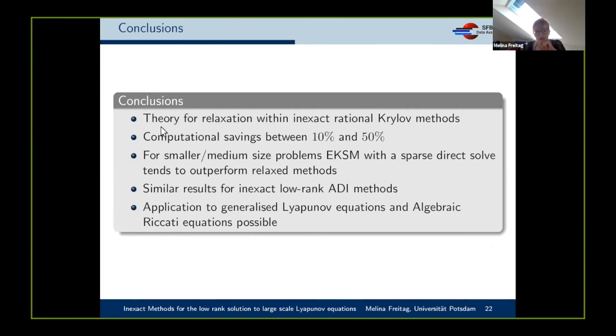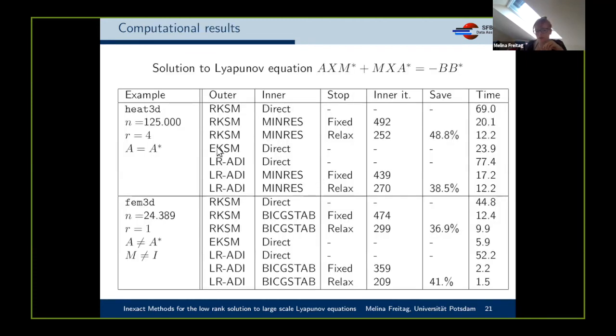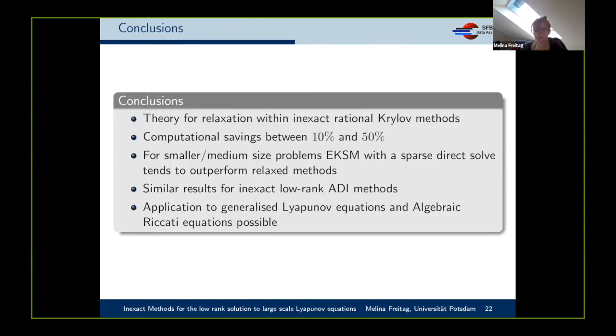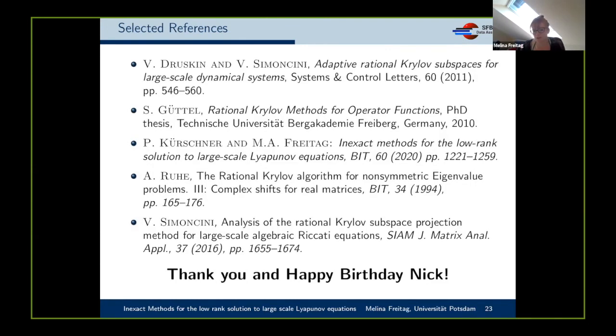Let me conclude. I've shown you some theory for inexact rational Krylov subspace methods. We've seen there are quite a bit of savings when you do this. We can extend this to ADI methods. What I haven't pointed out but you saw in the table is we can also beat the extended Krylov subspace methods—that's a method where you don't use shifts. You can use direct solves, but this is only true for very large problems. For smaller problems, the extended Krylov subspace methods do a better job. What I also haven't told you is that this can be applied to the Riccati equation. Here are some references. Thank you for listening, and happy birthday Nick.